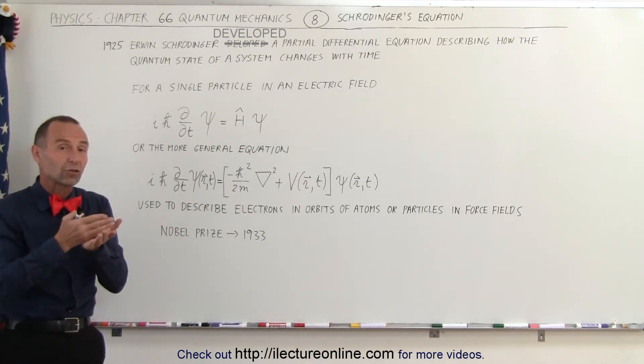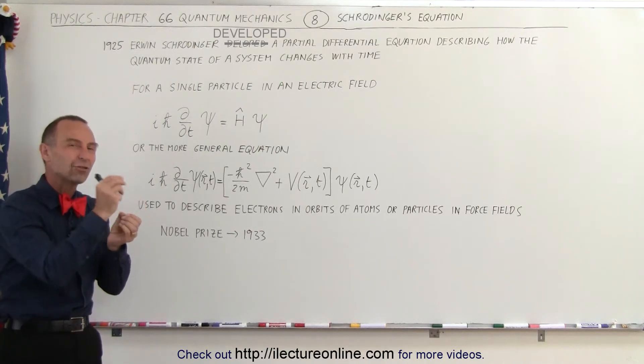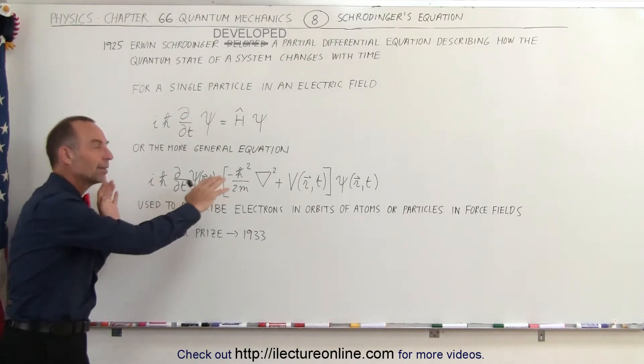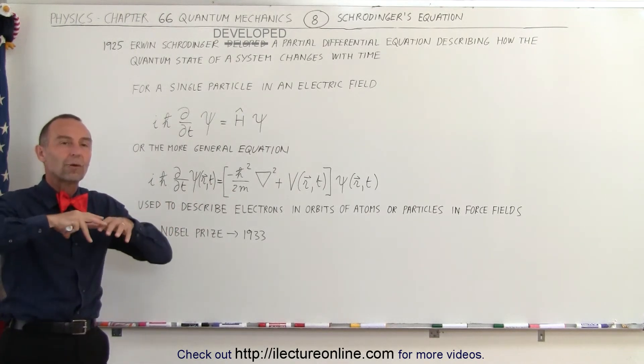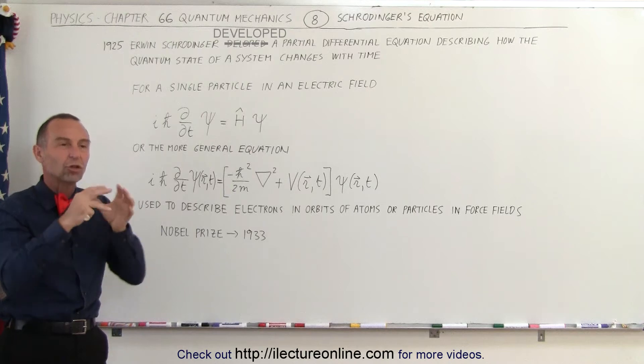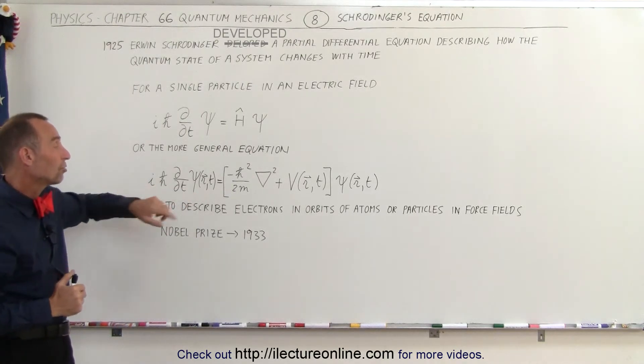Later on, they would then use the Schrodinger equation to then come up with the probability of the existence of the location of a particle depending upon the equation. And so there was actually now a methodology of describing what the position and what the state of a particle could be, and so that all came from this equation.